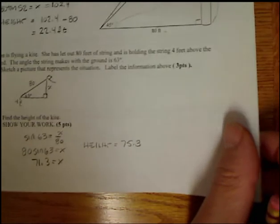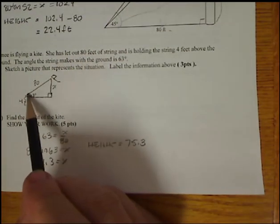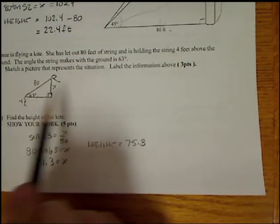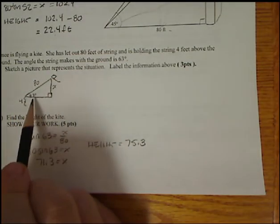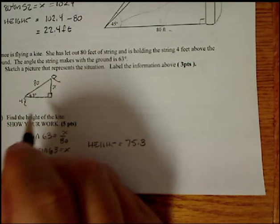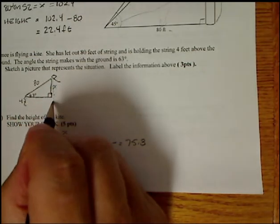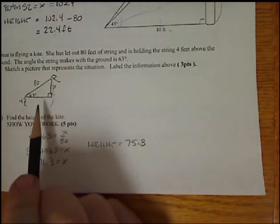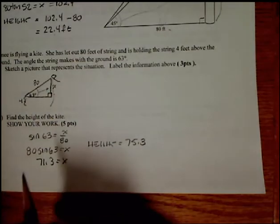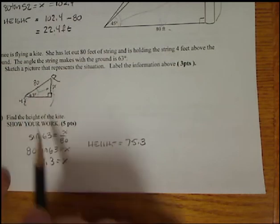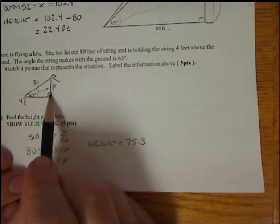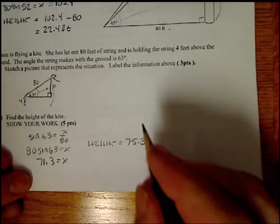For the other trig one, we have Amy is flying a kite. She has let out 80 feet of string. So that's where this 80 goes here. The string is 4 feet above the ground. So there's the 4. The angle the string makes with the ground, so it's parallel to the ground in actuality, is 63 degrees. And the first step, it asks you to sketch a picture representing the situation. I want to find out what the height of the kite is, and that's this entire height right here. But what I'm going to do first is figure out what x is. So this time, I'm given the opposite side and the hypotenuse. So I use sine. So sine of 63 is equal to x over 80. I get 80 sine 63 equals x. We solve it, we get 71.3. That's 71.3 from here. Then we add 4. Gives me 75.3. And that would be in feet.